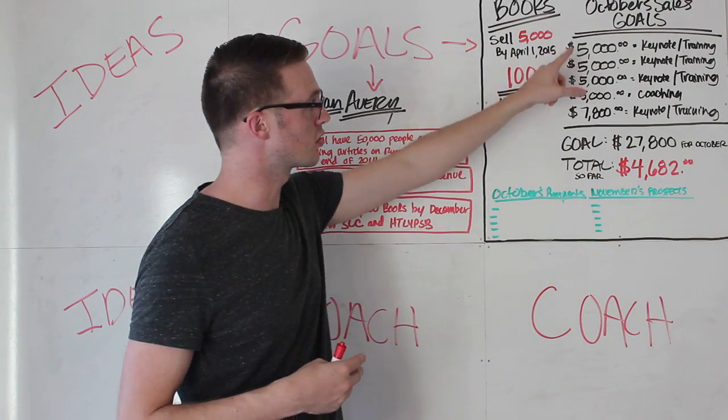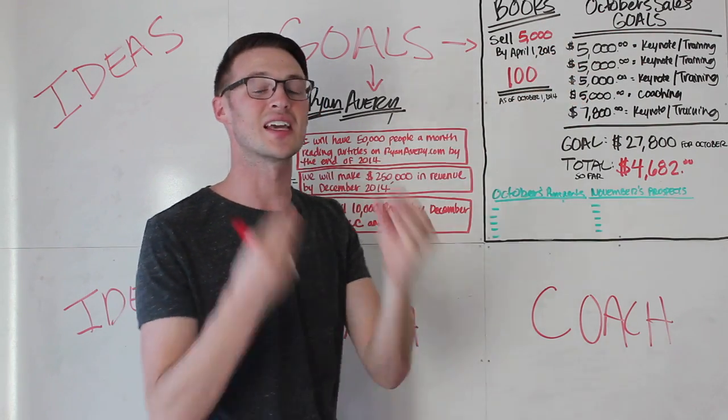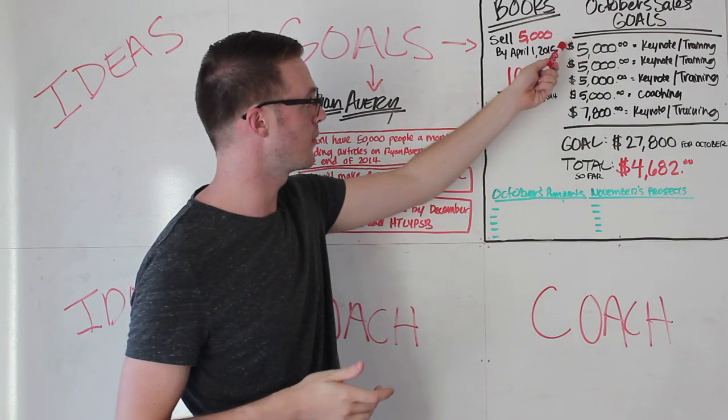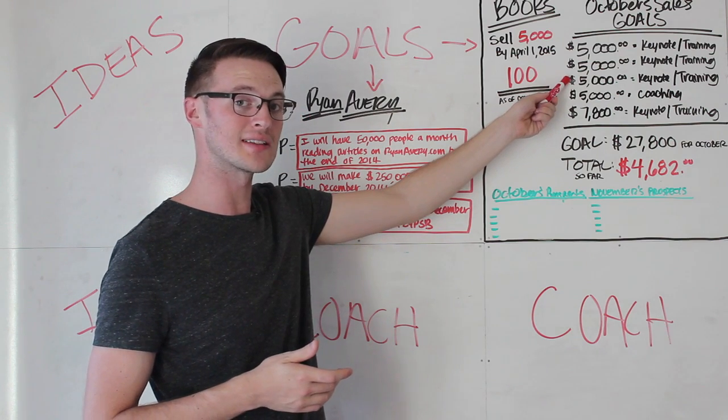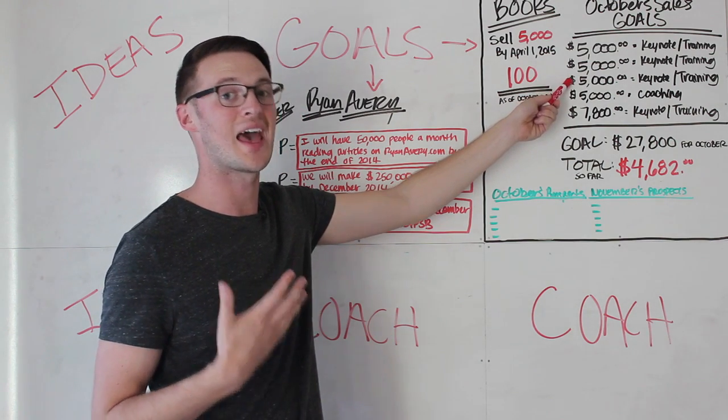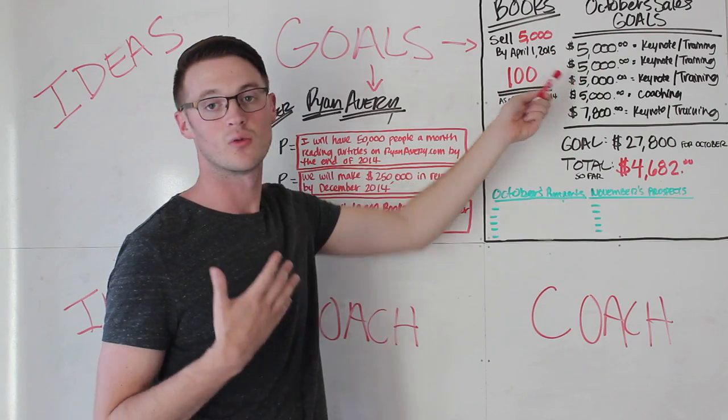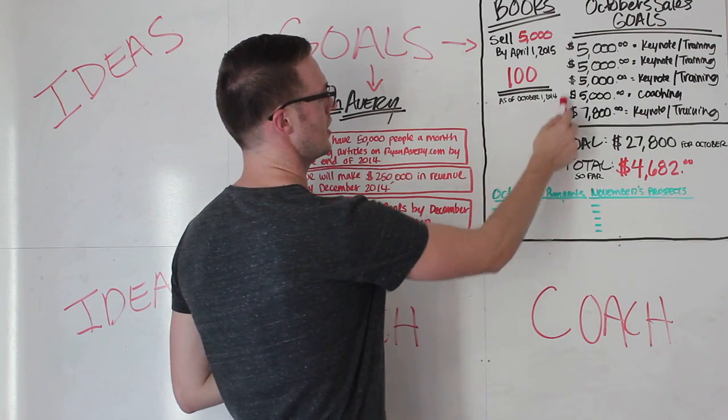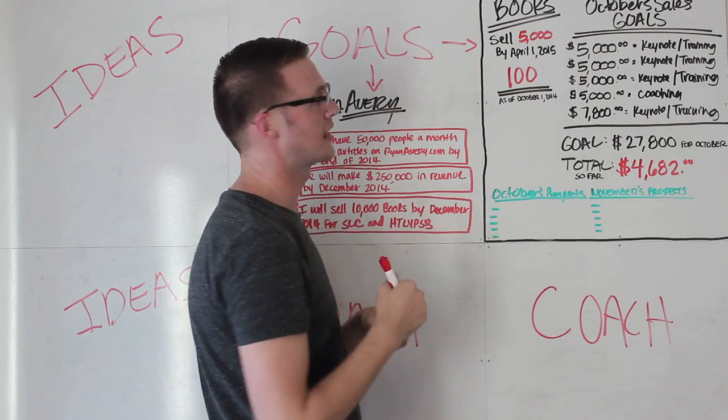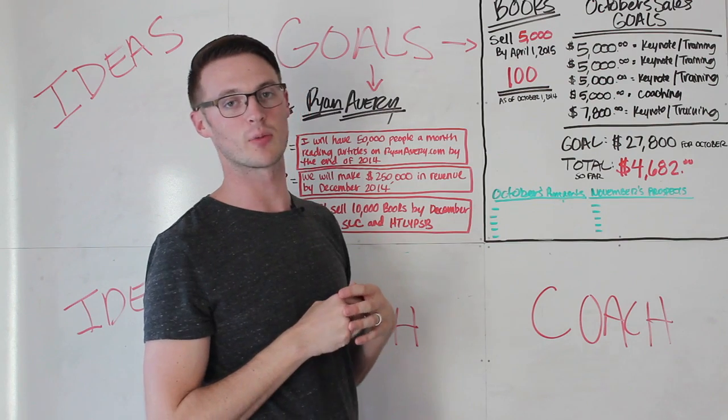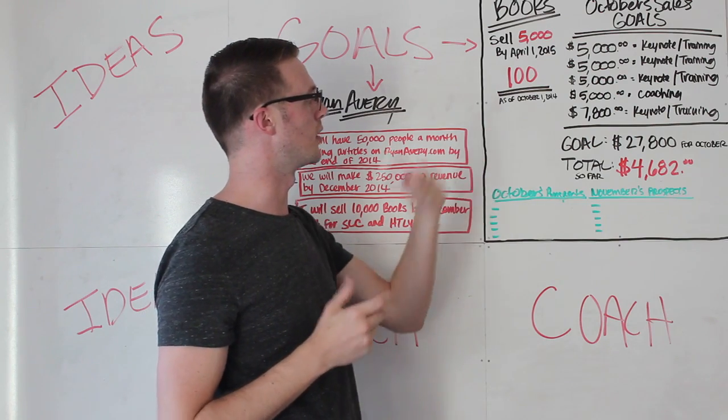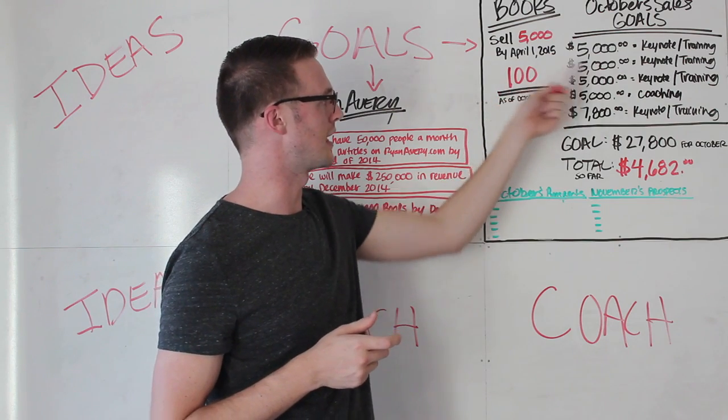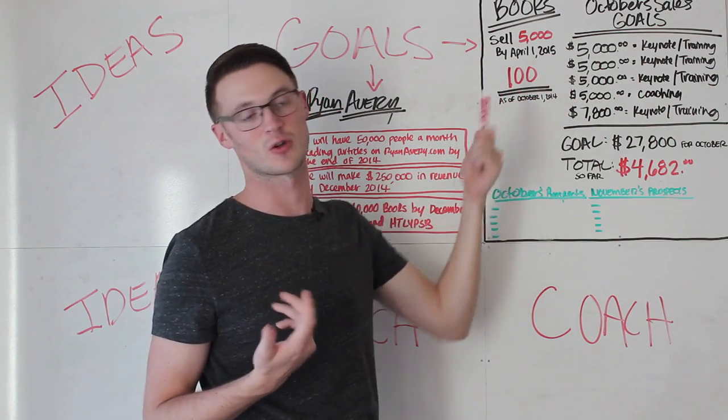Another thing is you don't circle these goals off until the contract and cash are in hand. So do I have about three different keynotes and trainings that I'm going to be doing this month and meeting with? Absolutely. But I have not received the contract or cash so I have not circled that off yet. I also just added this one here. I want to sell 5,000 more copies of Speaker Leader Champion before April 1st so I am putting that up there. I just sold 100 and what I'm doing is I'm tying that in as a reminder that I can do that with my keynotes and trainings.